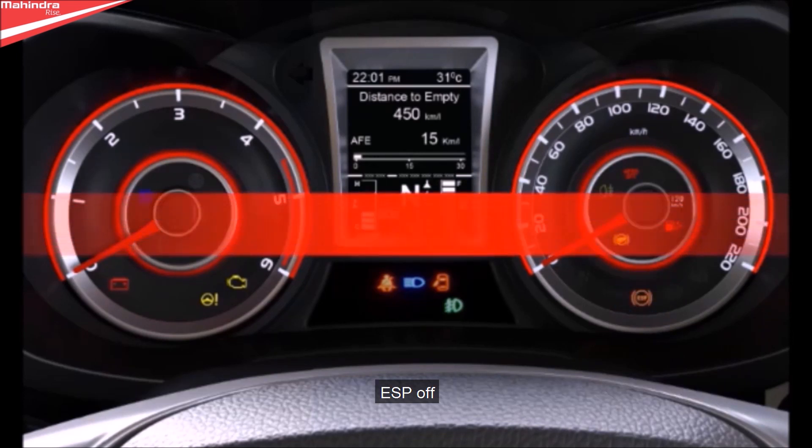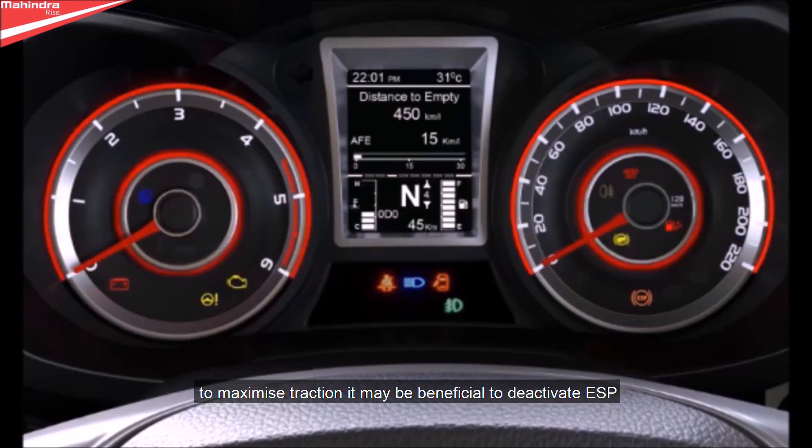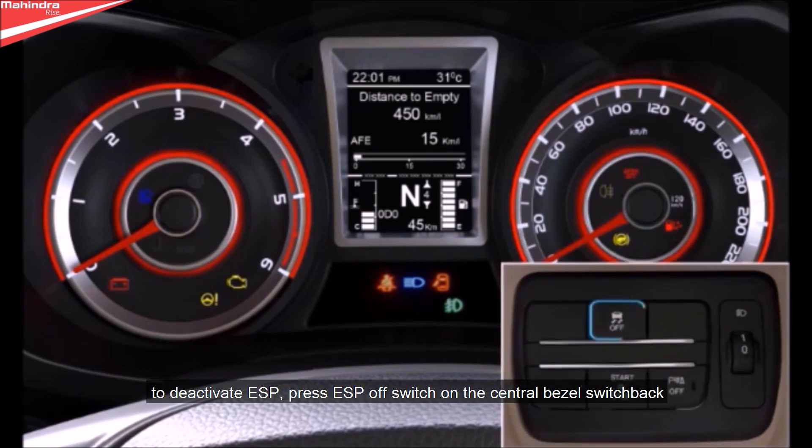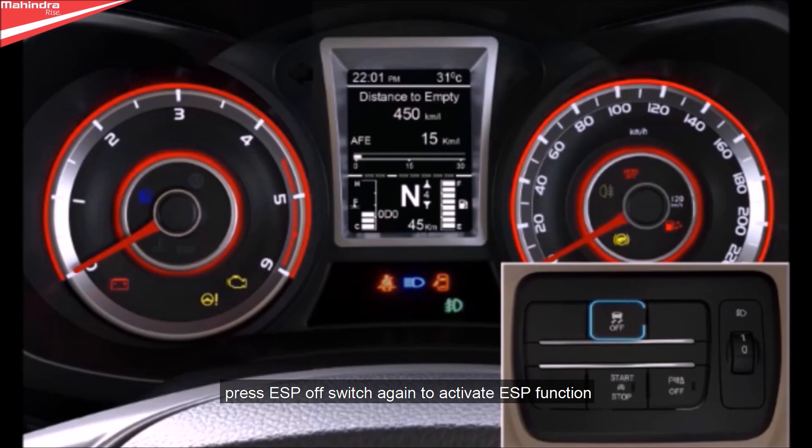ESP off: To maximize traction, it may be beneficial to deactivate ESP. To deactivate ESP, press the ESP off switch on the central bezel switchback. Press the ESP off switch again to activate ESP function.